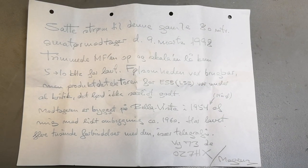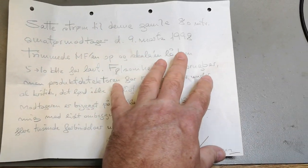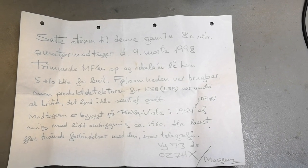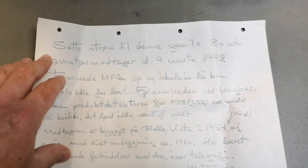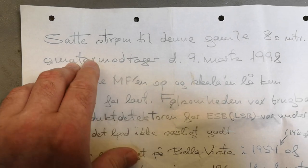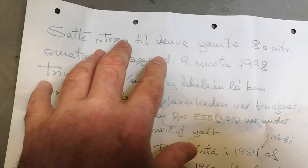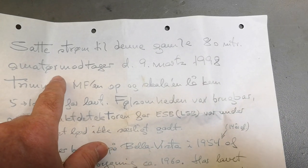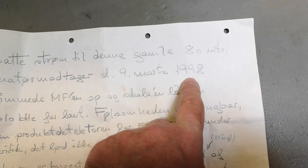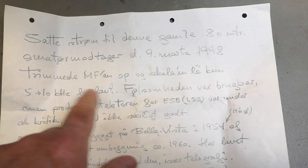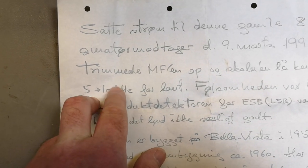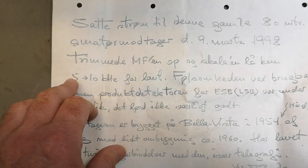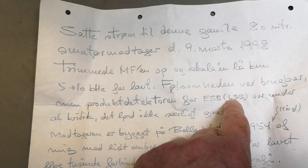Inside the unit I find this note. It was carefully folded together and this is the entire story about this radio receiver. I think that is really cute. Let me try and explain or translate this. He powered this up, this old 80 meter receiver, in 1998. He trimmed it on the scale and it was a little bit too low, only five to ten kilohertz too low. Sensitivity was usable but the product detector for lower sideband was really bad.